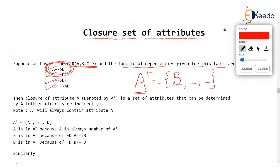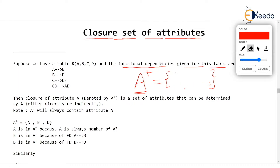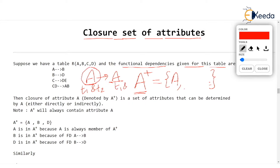When we find closure of an attribute like A+, it is a set which contains all the attributes that can be functionally determined by A. Now, A itself will be a member of A+. Why? Because A determines A — this is a trivial dependency. In two tuples T1 and T2, if the value of A is equal, then the value of A has to be equal in that tuple. So make a rule: when we are finding attribute closure of A, that is A+, then A will be an inherent member of A+.